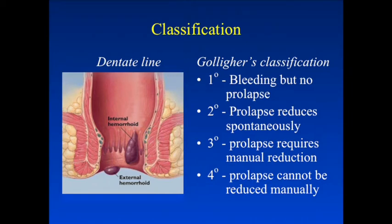Hemorrhoids are classified into internal or external hemorrhoids, depending on whether they arise from above the dentate line or below it. Hemorrhoids that arise above the dentate line are internal hemorrhoids, and hemorrhoids that arise below the dentate line are external hemorrhoids.